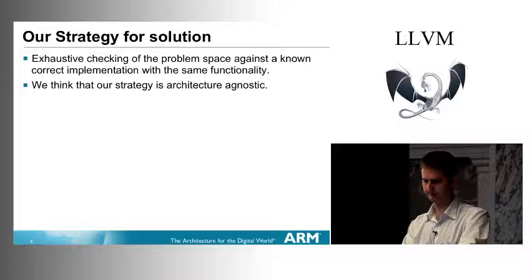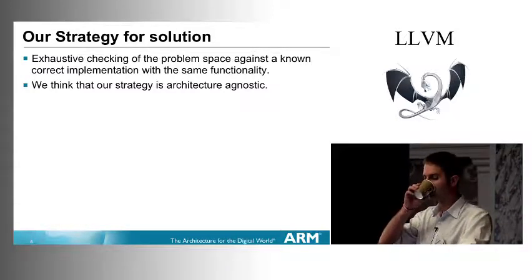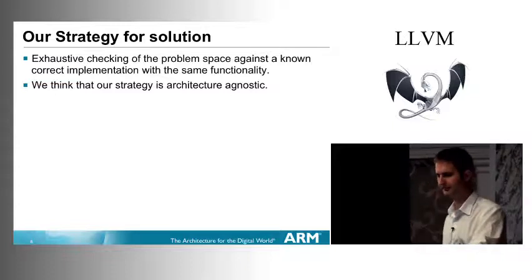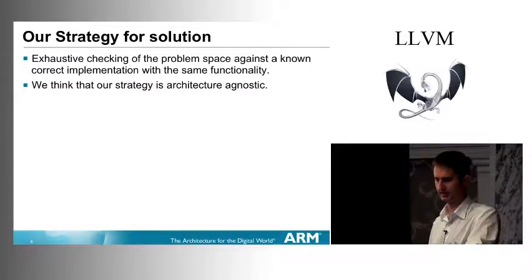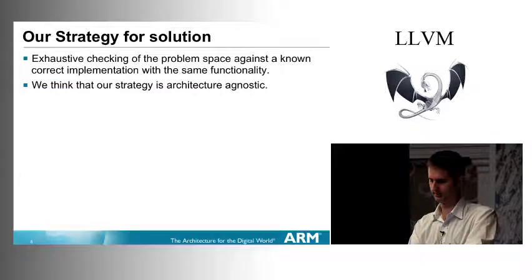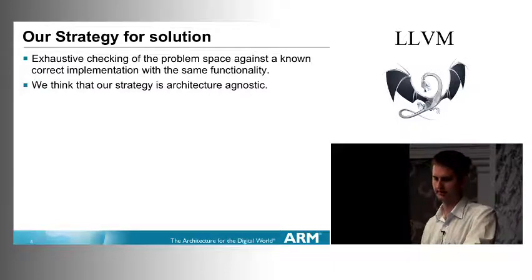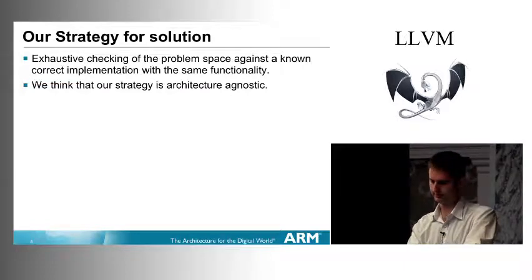The strategy is that we feel the only way to guarantee correctness is exhaustively checking the whole problem space against a known, correct implementation with the same functionality. We think this is an architecture-agnostic approach — not just specific to ARM. If you were bringing up another architecture or proving correctness of another architecture in MC, this could equally be applied.